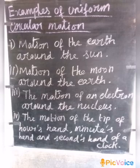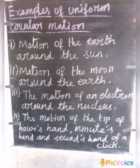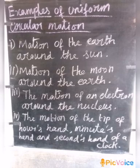Another example is the motion of an electron around the nucleus. Also, the motion of the tip, hour hand, minute hand, and second hand of your clock — if the clock moves at constant speed, that is Uniform Circular Motion.